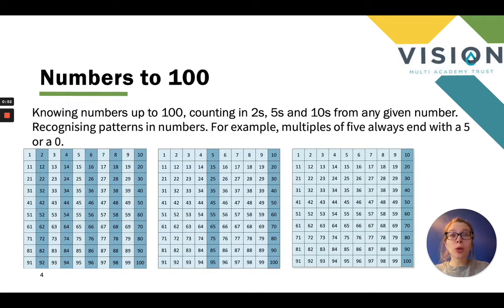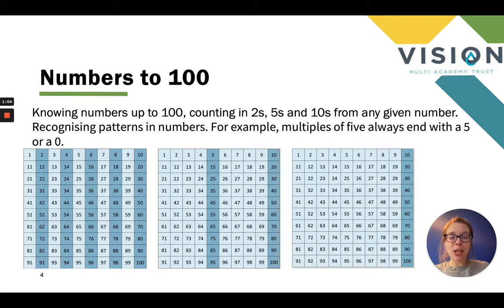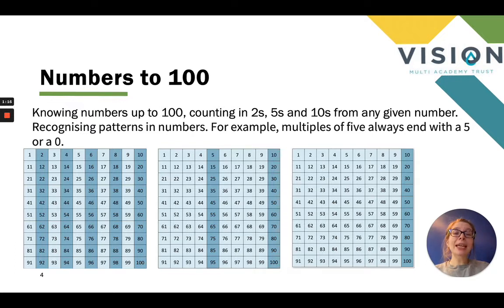Looking at numbers to 100 first of all. It's important that children in year one know the numbers up to 100 and are able to count within there, counting up in twos, fives and tens from any given number. So that's not just starting at zero — it could be counting up in twos from three, from seven, from 28, and the same for fives and tens.